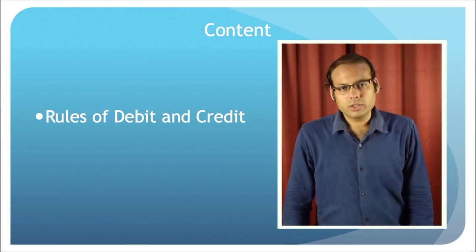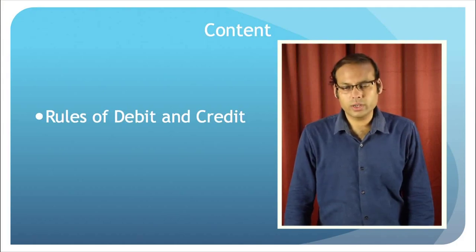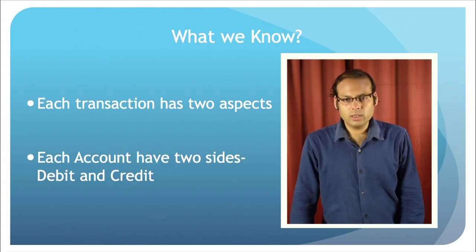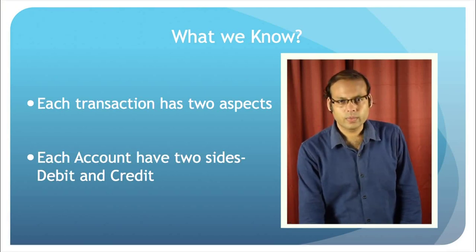Hello everyone, welcome to this third part of the SEM Unit 4, Accounting Process 1 of BCOM First Semester Financial Accounting. In this particular session, we will discuss the rules of debit and credit. We know that we record the transactions under the double entry system of bookkeeping, and under this system each transaction has two aspects.